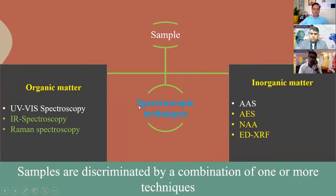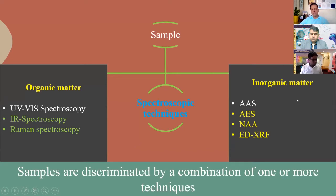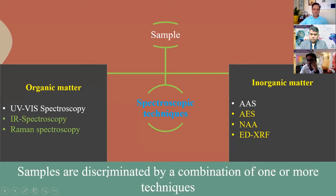The third group is spectroscopic techniques. Some analyze only the organic fraction and some the inorganic fraction. For the organic fraction: UV-visible spectroscopy, infrared spectroscopy, and thermal spectroscopy. For the analysis of inorganic matter: atomic absorption spectroscopy, atomic emission spectroscopy, neutron activation analysis, and X-ray fluorescence. By using these techniques, samples can be discriminated from each other by a combination of one or more methods.